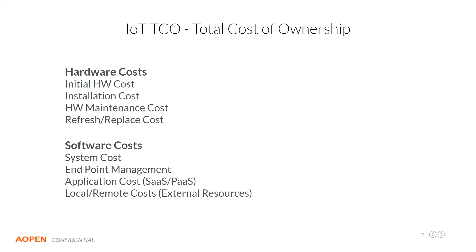It's a general discussion about systems technology and the future of the technology — where it is, where it's going, and where the costs come from in these types of solutions, and what companies are doing to try and combat those costs. The main concept is price and total cost of ownership: if you have an application running for an extended period of time on an IoT edge device, it involves two primary costs — hardware costs and software costs. Since Aopen is a hardware company, this presentation will mostly focus on hardware costs.